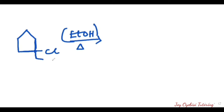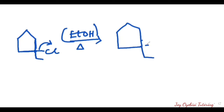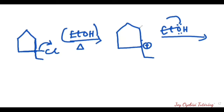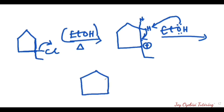In E1, we start with the chlorine breaking off, forming a carbocation where the chlorine was originally. Then the alcohol deprotonates, removing a hydrogen from the adjacent carbon and the bond breaks, forming a double bond. That gives us the product, which is an alkene — a cycloalkene in this case.